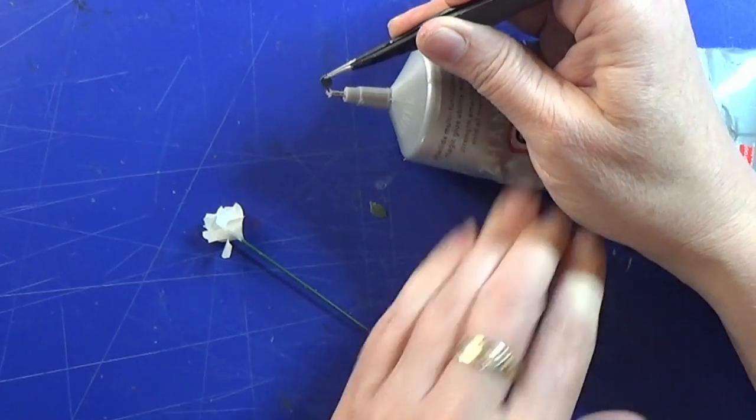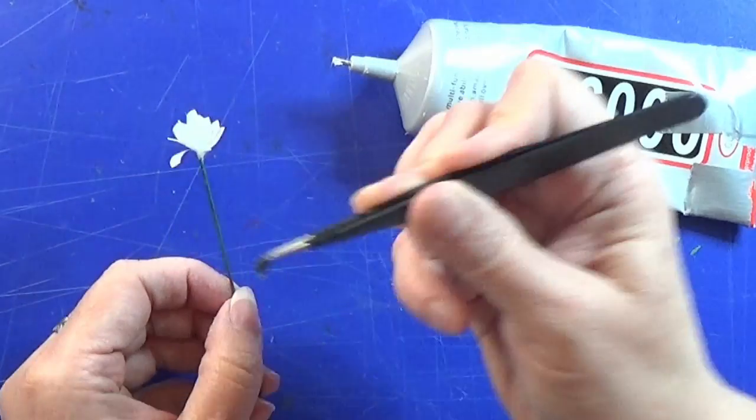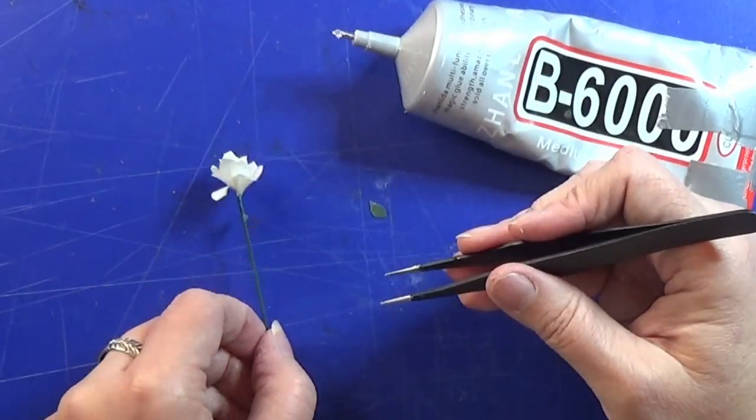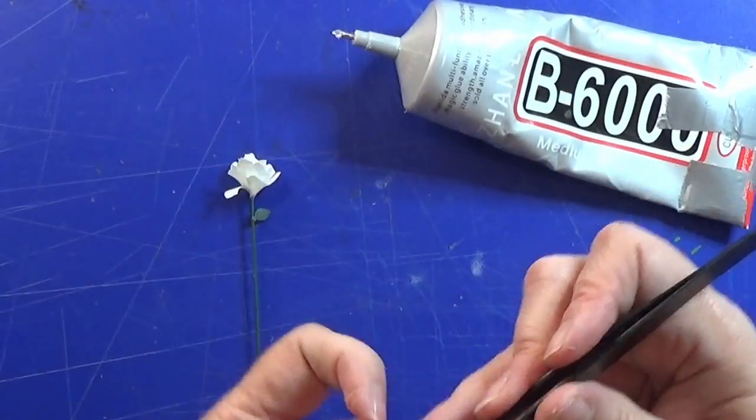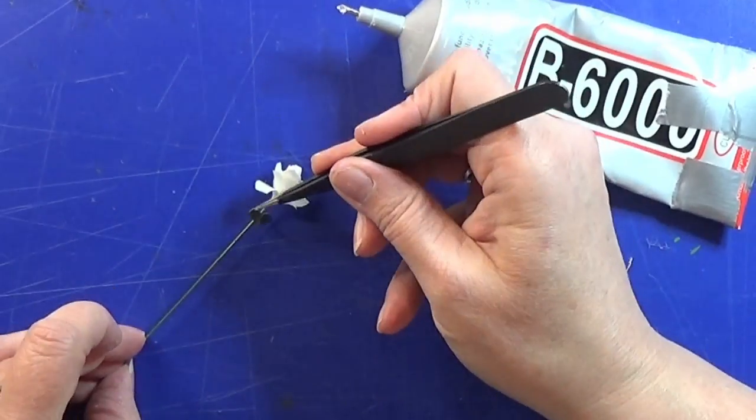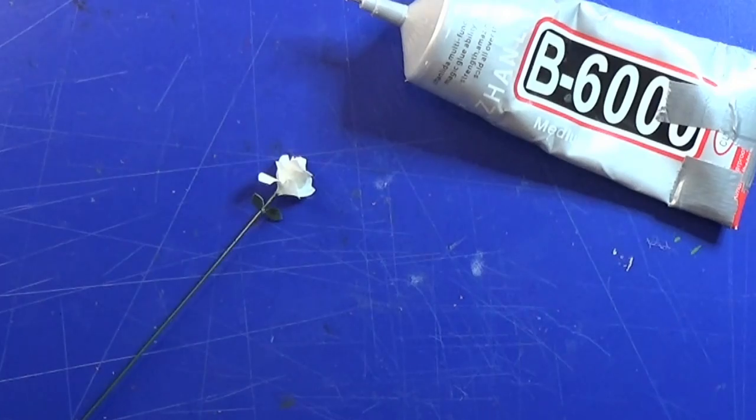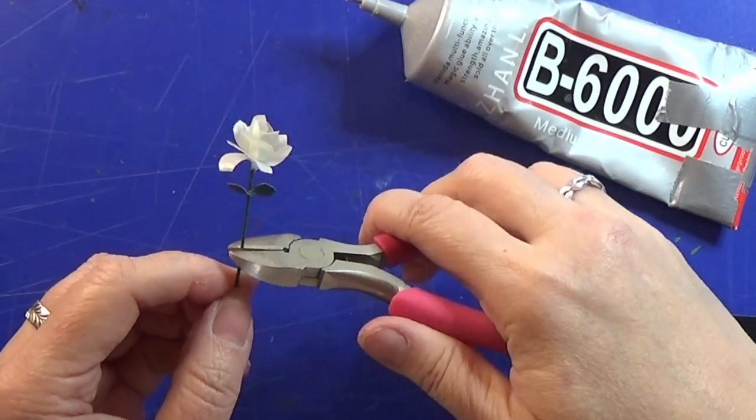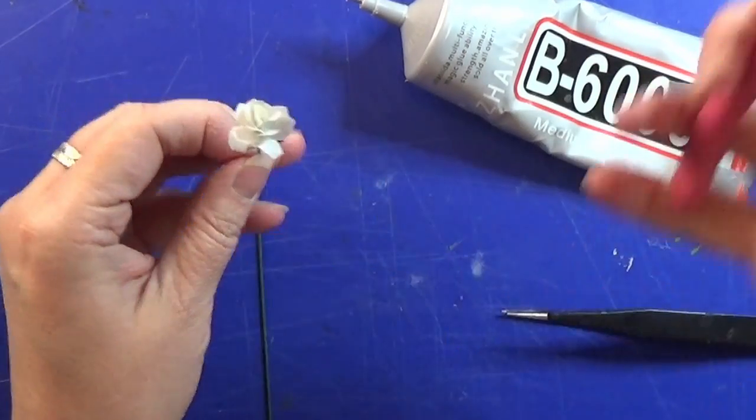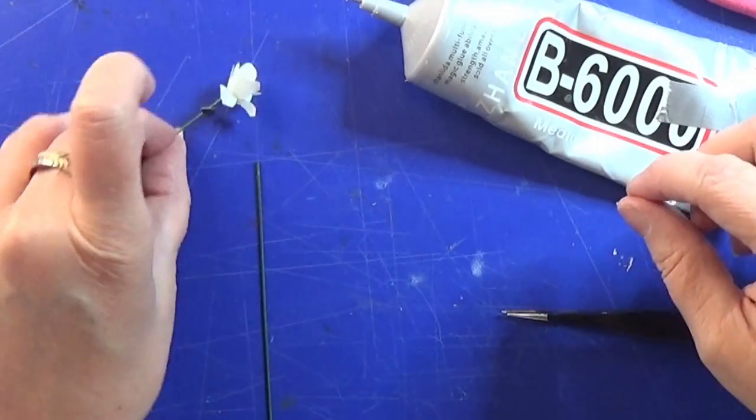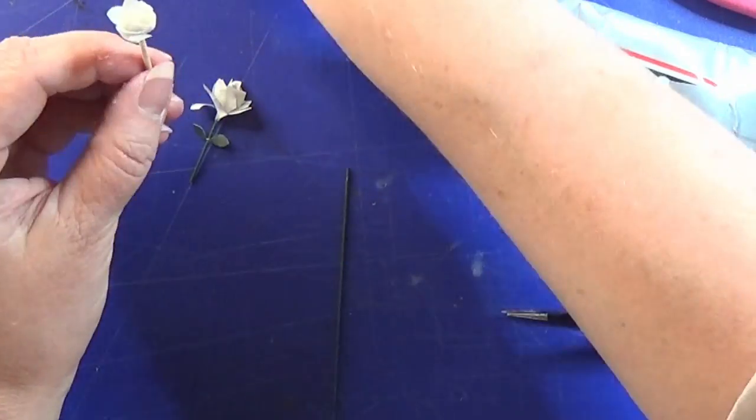I have some leaves that I cut out from some green paper with one of those leaf punchers. And I am just gluing a few of these on the stem and cutting it off to the length I like it. If you don't have this metal rod you can always use a toothpick. And I did make one on a toothpick and I am going to paint this green later on.